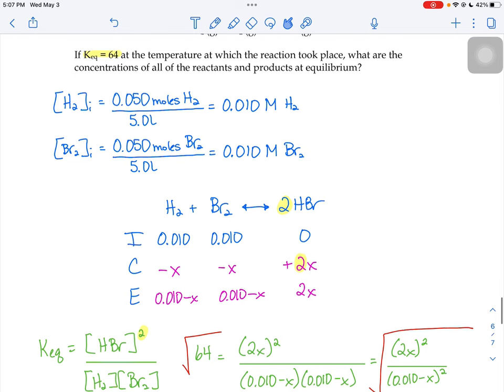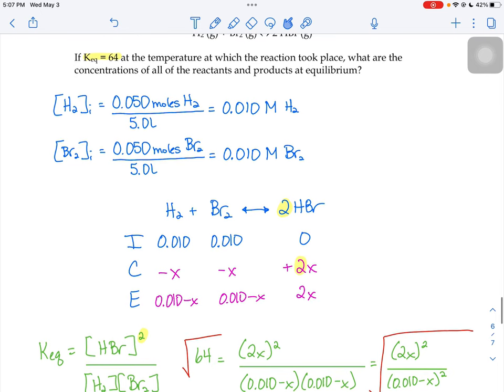We don't know what the change for hydrogen and bromine are going to be, but we do know that they're going to be the same number because they're in a one-to-one ratio in the balanced chemical equation.